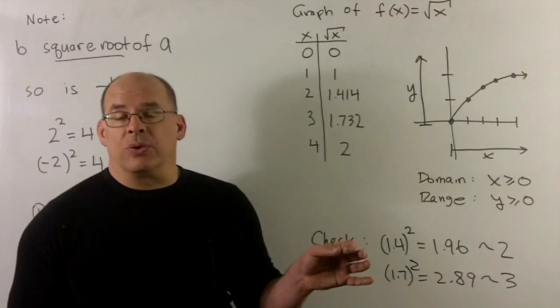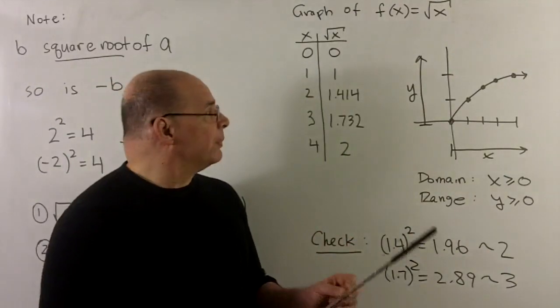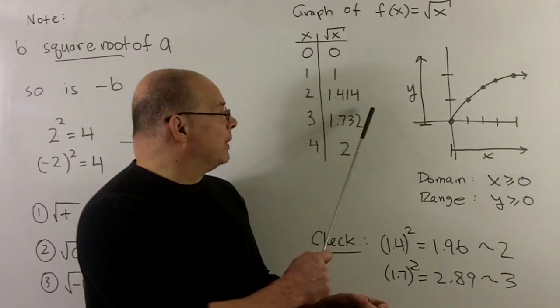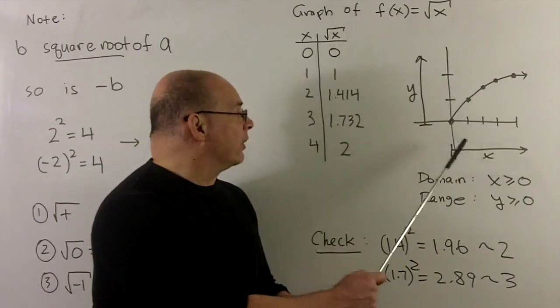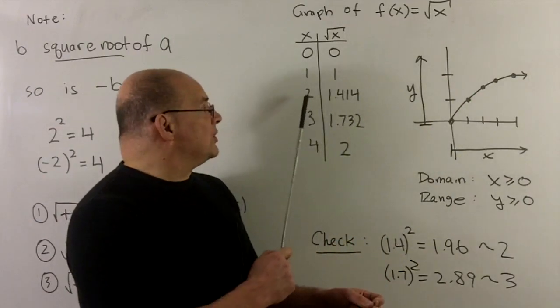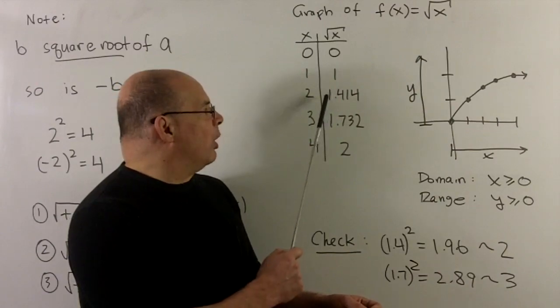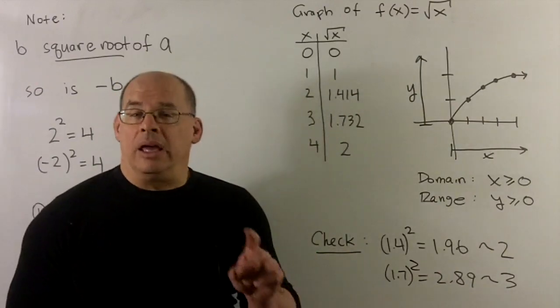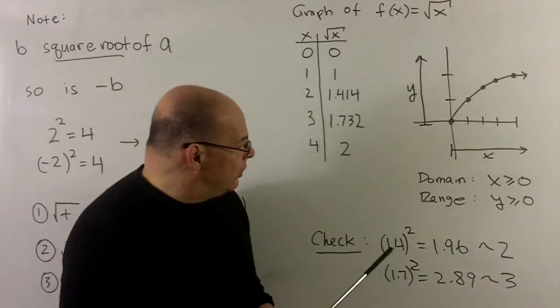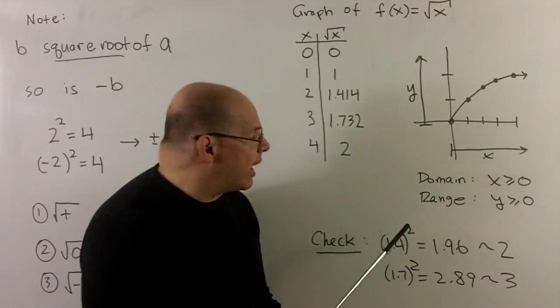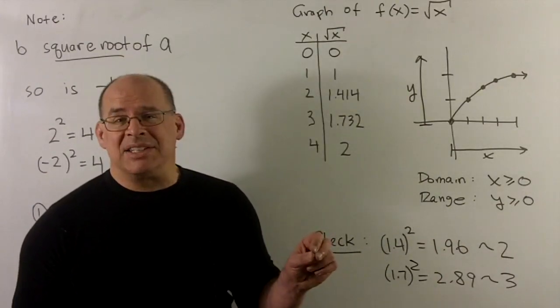For two and three, we might want to go to a calculator to get these numbers. I'll just cut them off at three decimal places, but these are going to go on forever. So the square root of two is roughly 1.414. If we want to make sure of that, what I can do is just take 1.4 and square it. I get a 1.96,